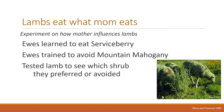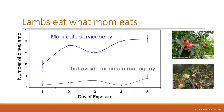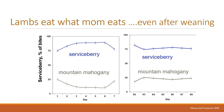Lambs generally eat what mom eats. One of the first experiments on this was done by Sarwat Mirza and Fred Provenza at Utah State. In 1990 they wanted to know how important mother's influence was on lambs. Ewes learned to eat serviceberry and were trained to avoid mountain mahogany. The results were strong: if mom ate serviceberry, the lambs ate serviceberry; if she avoided mountain mahogany, the lambs avoided it. This persisted months later and even after weaning — two months later lambs still preferred serviceberry over mountain mahogany.